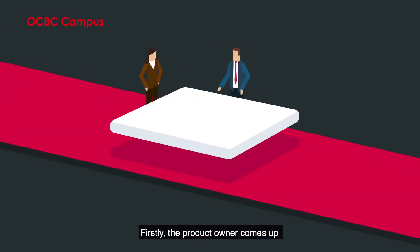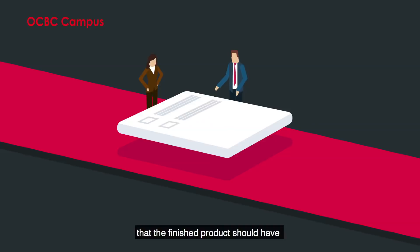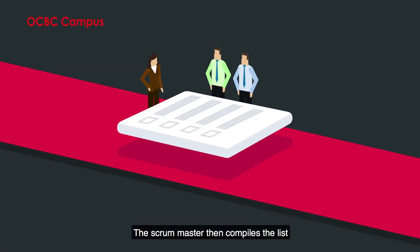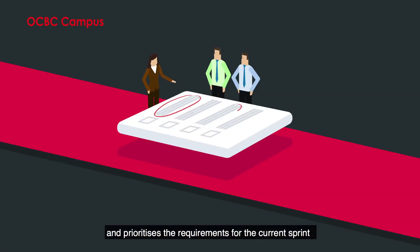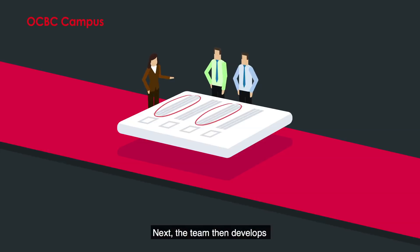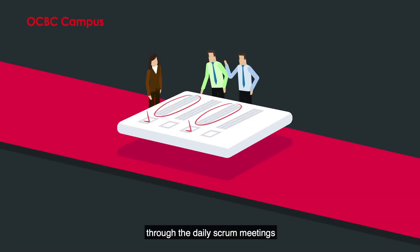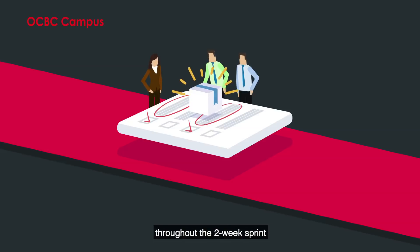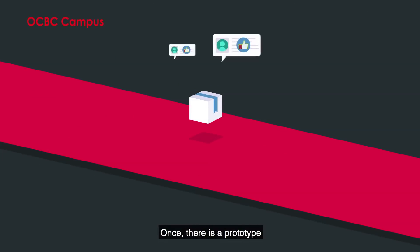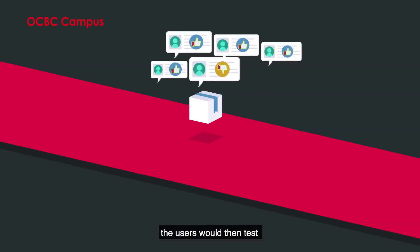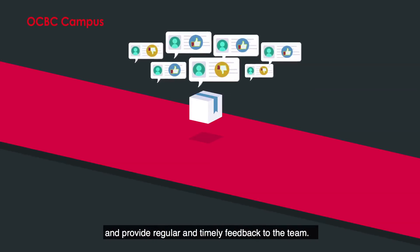Firstly, the Product Owner comes up with a list of requirements that the finished product should have. The Scrum Master then compiles the list and prioritizes the requirements for the current sprint. Next, the team develops a workable version of the product based on the prioritized requirements. The work progress is further managed through daily Scrum meetings throughout the two-week sprint. Once there is a prototype, the users would test the current iteration of the product and provide regular and timely feedback to the team.